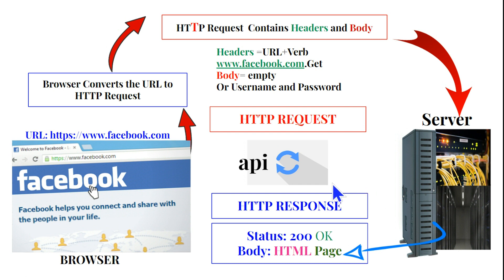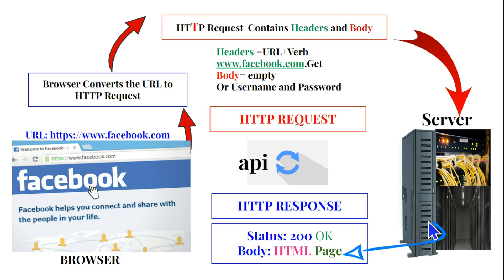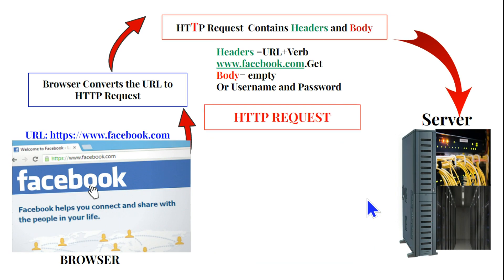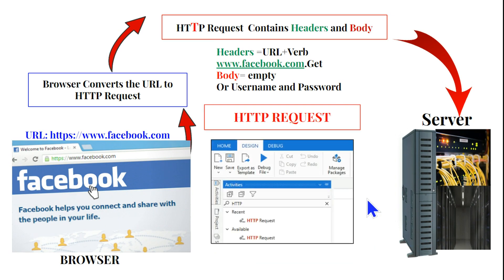All of this happens in the back end — you don't see it. One part works at the server side, one at the client side, and they exchange data. This is exactly what API means: it is responsible for data exchange — data going from the client to the server and data flowing back from the server to the client.